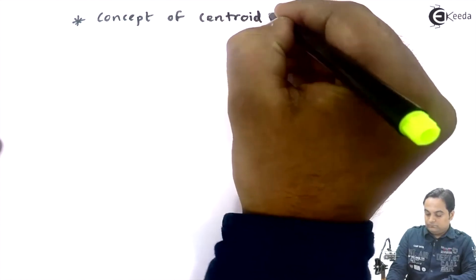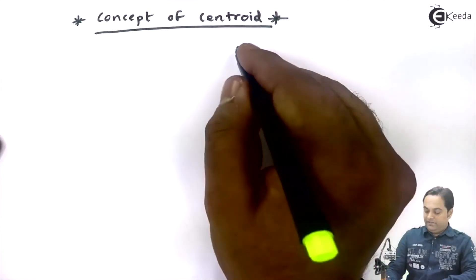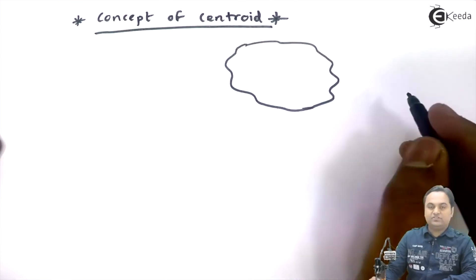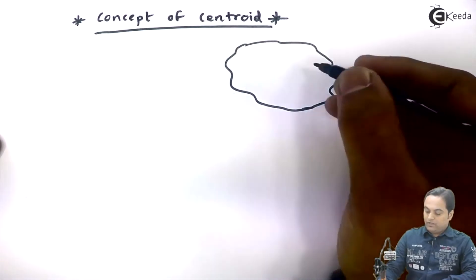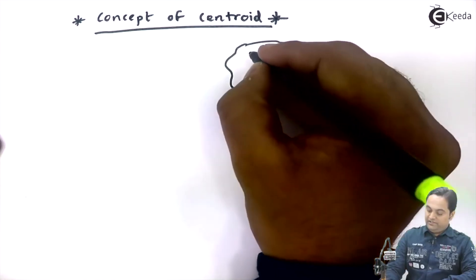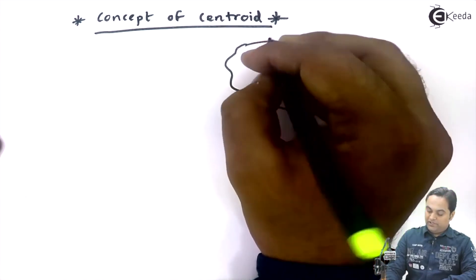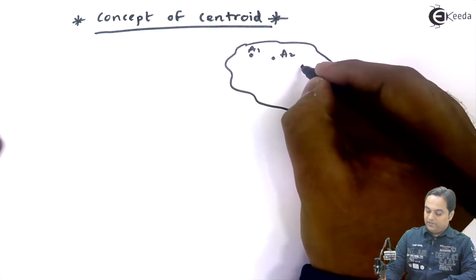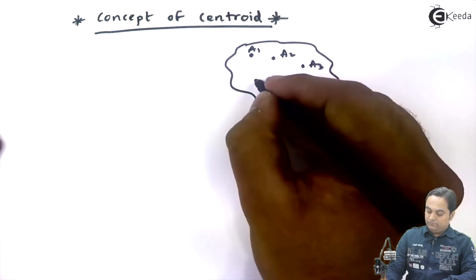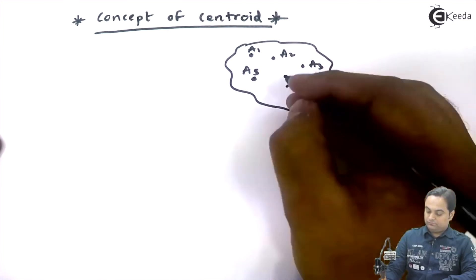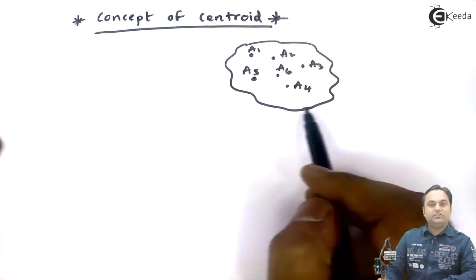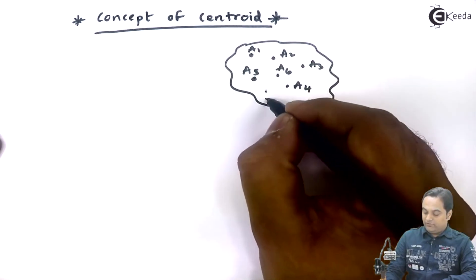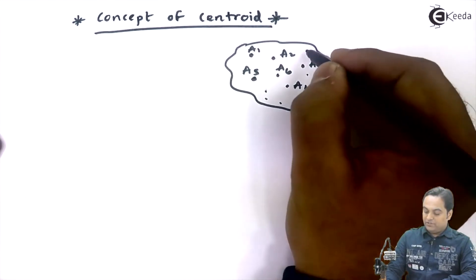Let me consider a plane figure which is of any general shape. Now this figure which I have, it consists of small small areas. Here there will be area 1, for example area 2, area 3, and so on. So this figure is made up of small small areas. Here I have denoted them and like this you have number of areas which are acting over this plane figure.